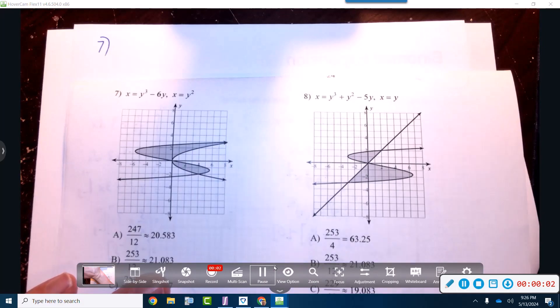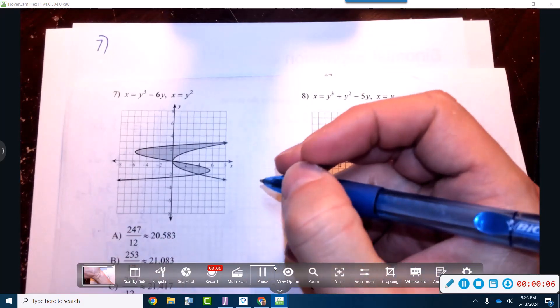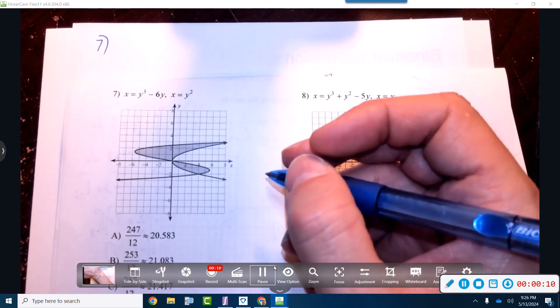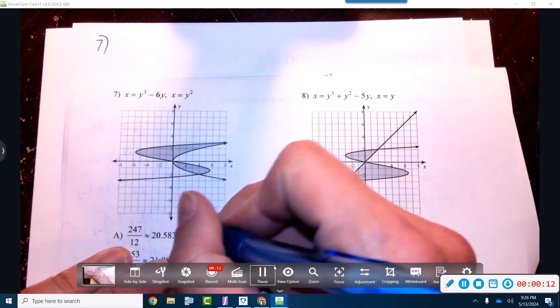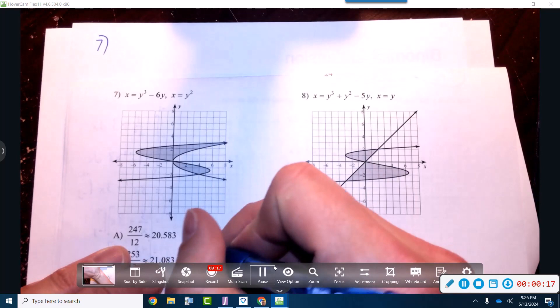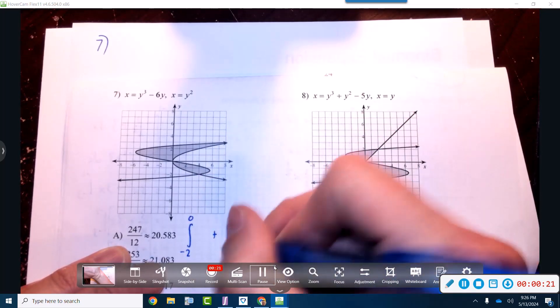Alright, number seven. This is switched. We've got two of them here. We're going from negative two to zero, and then we're going to add from zero to...